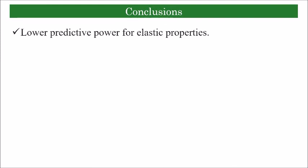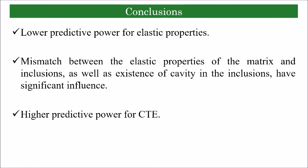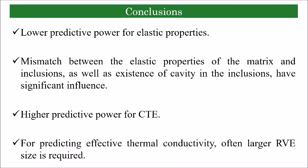2D FE simulations may not represent effective elastic properties of such particle-reinforced composites with sufficient accuracy. The mismatch between the elastic properties of the matrix and inclusions, as well as existence of cavity inside the inclusions, are two factors that significantly influence the difference between the predictions of 2D FE and fiber GSCS. 2D FE simulations represent effective CTE of such particle-reinforced composites with sufficient accuracy. To achieve similar accuracy for 2D FE prediction of thermal conductivity compared to other properties, often RVEs with larger sizes are required. This is predictable given the type of boundary conditions applied to these analyses.